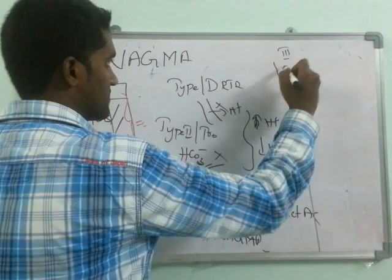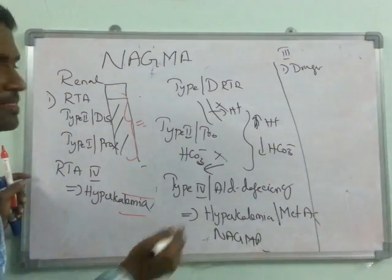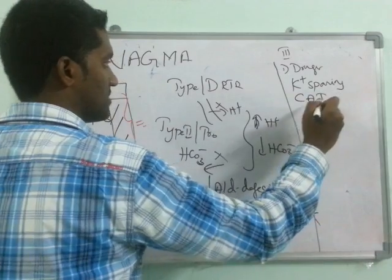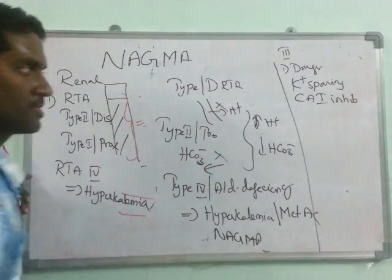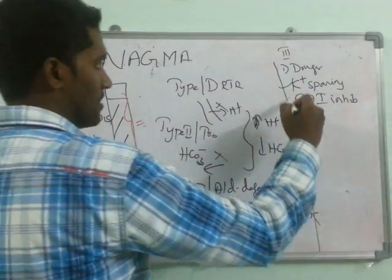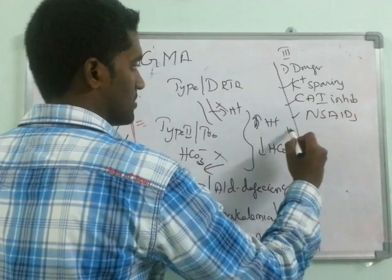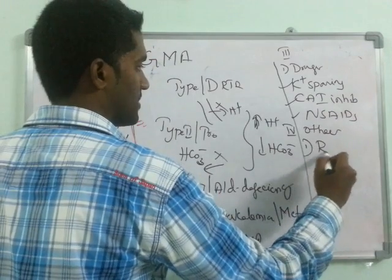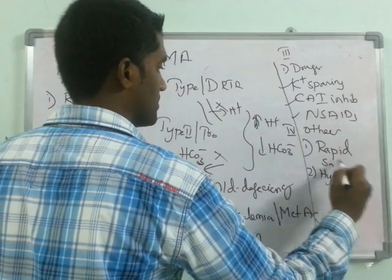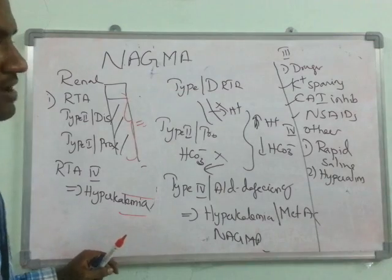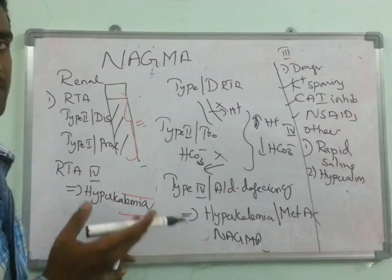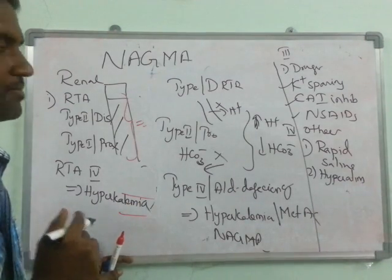The third cause is drugs: potassium-sparing diuretics and carbonic anhydrase inhibitors — which inhibit the conversion of CO2 to H+ and HCO3 minus, decreasing reabsorption of HCO3 minus — and some NSAIDs. Other causes include rapid saline administration and hyperalimentation: when you administer IV fluids at a higher rate, bicarbonate absorption usually decreases, resulting in metabolic acidosis of the non-anion gap type.